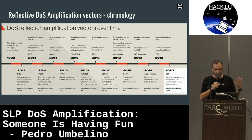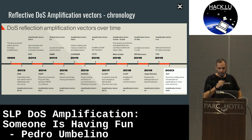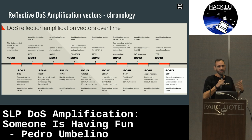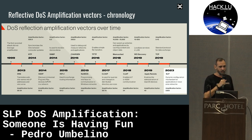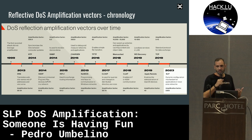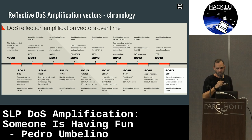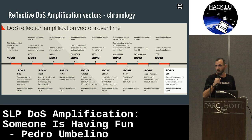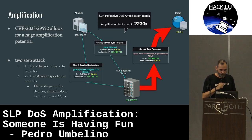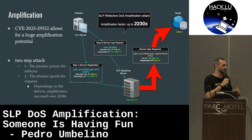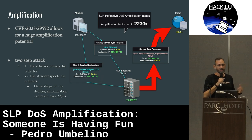This CVE — why is it important? In essence, this is currently the highest amplification factor for reflective denial-of-service attacks. The previous highest was memcache, but there are no longer vulnerable memcache instances available for attackers to use. Contrary to that, there are quite a lot of SLP instances. A reflective amplification denial-of-service attack is basically two things: it's reflective, meaning an attacker spoofs their target's IP address, and it's amplified, meaning the attacker sends a small packet and the vulnerable server replies with a big one.